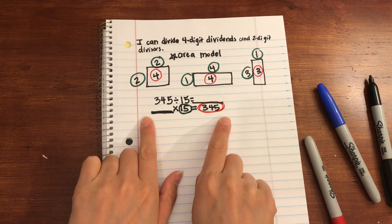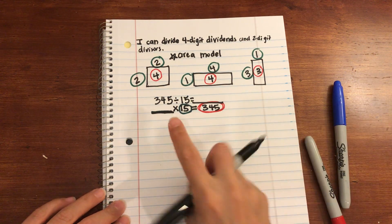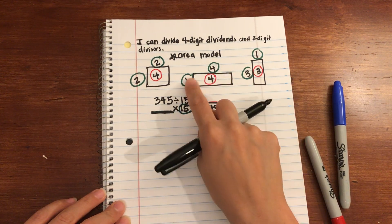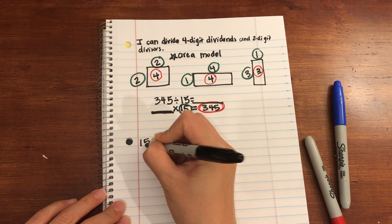So I can rewrite this equation now as an area model. So as you can see, you can put the 15 off to the side. I'm going to choose the left.